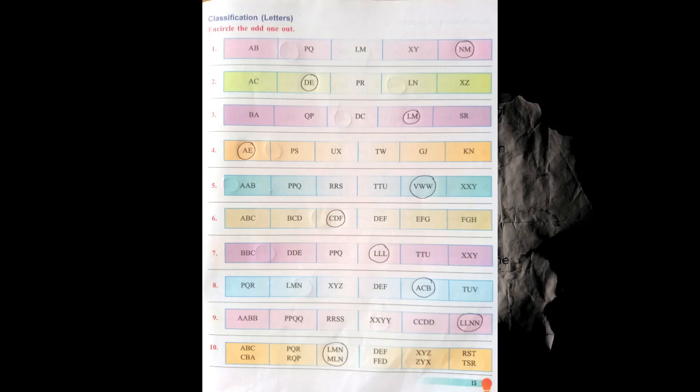Now four: AE, TS, UX, TW, GJ and KN. AE is the odd one because in all the other pairs two letters are skipped between them. In AE however three letters are skipped — A, B, C, D — so AE is the odd one. Now five: AA B, PP Q, RR S, TT U, WW X and XY. WW X — wait, B is the odd one because in all other pairs the first letter is repeated, except B which does not follow that pattern.